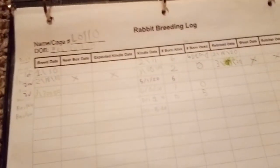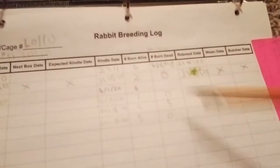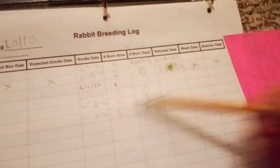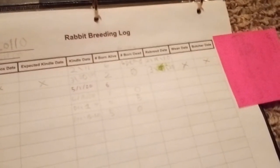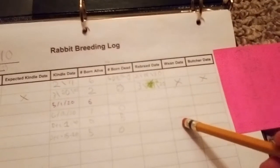The date she was bred we don't really need. Nest box date we don't need, expected kindle date we do not need. Kindle date, actual kindle date right here, is December 15th, 2020. Five born alive, zero born dead. I'll come back later if one happens to die. Rebreed date I don't know when she was rebred. Weaning date we don't need because we go by each litter. Butcher date we don't need because we go by weight. Basically we just filled out when she gave birth, how many she had, and how many died.